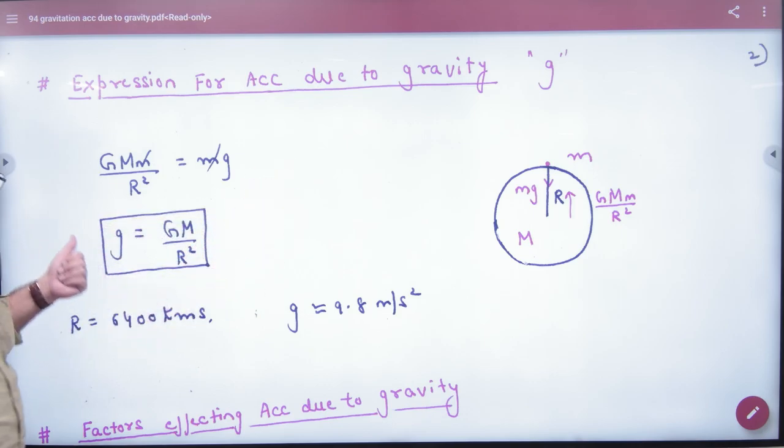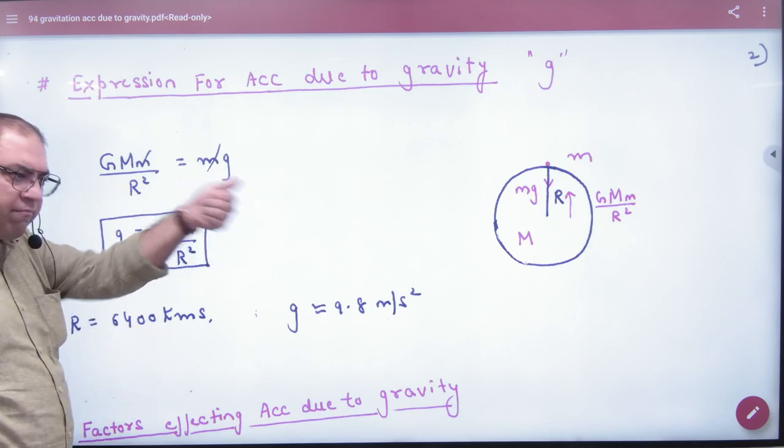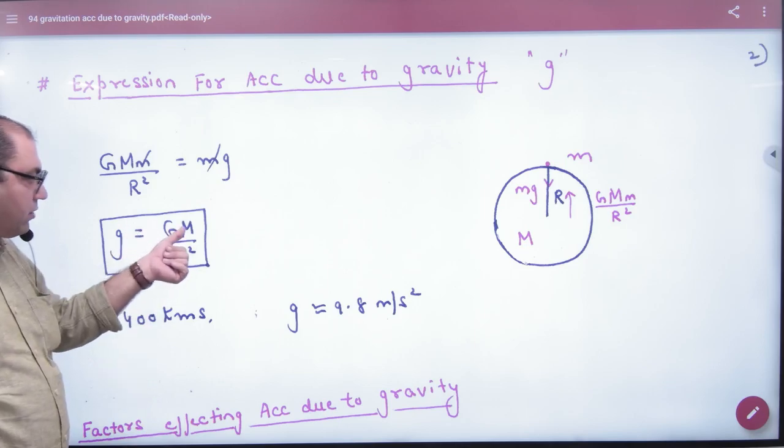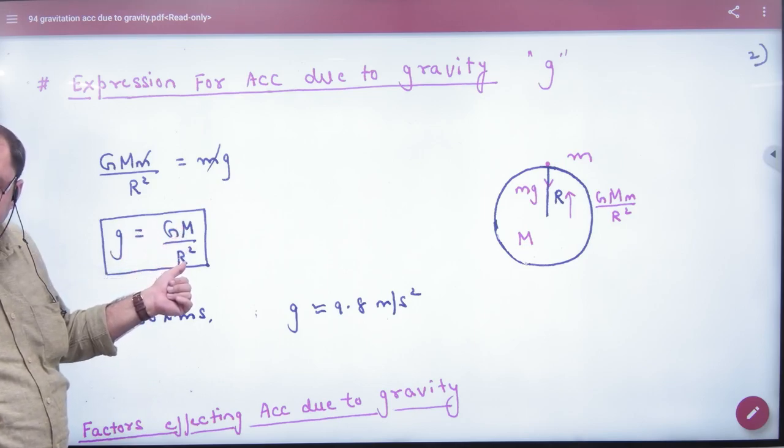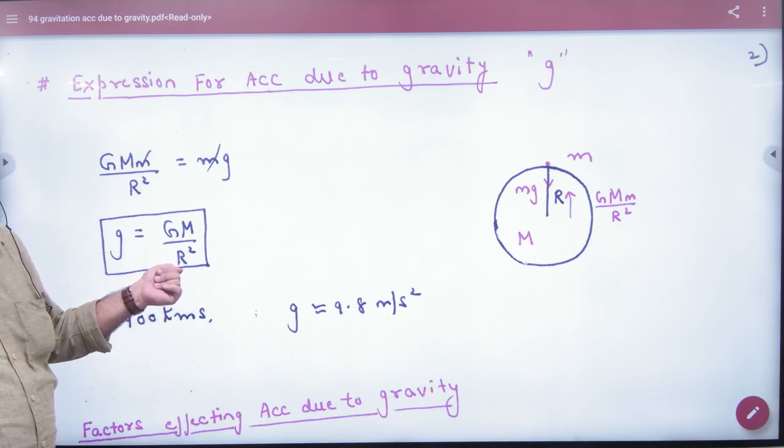So acceleration due to gravity depends on the planet's mass, which is Earth, Jupiter, Moon, anything. This formula is valid for everyone. So this is mass of planet and this is radius of planet. So acceleration due to gravity, this will be on any planet's surface.